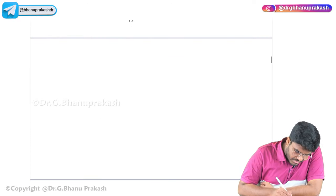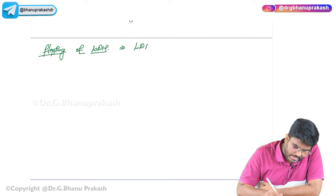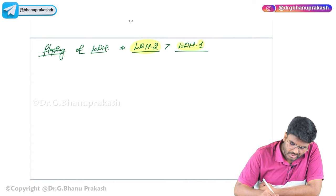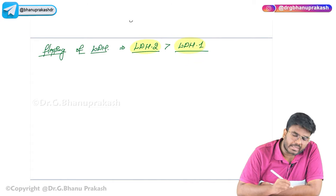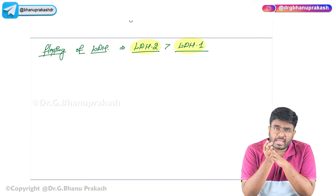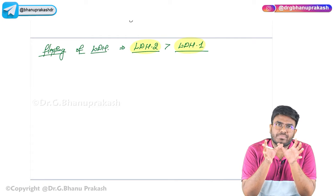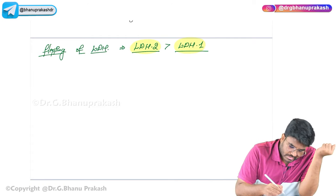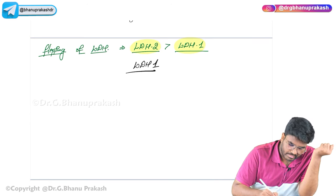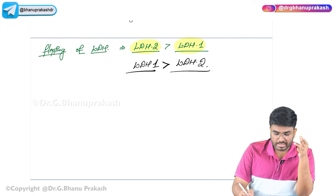In the labs, there is also something called flipping of the LDH ratio. In a normal healthy person, LDH type 2 is greater than LDH type 1. But in myocardial infarction, the cardiac myocytes are dying and LDH type 1 leaks into the blood. So LDH type 1 levels become greater than LDH type 2 - this reversal is called flipping of the LDH ratio.